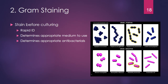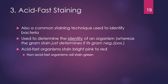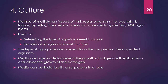Acid-fast staining is another common technique used to identify bacteria. Whereas gram staining just determines whether an organism is gram-negative or gram-positive, acid-fast staining actually tells you the identity of the organism. Acid-fast organisms stain bright pink to red, while non-acid-fast organisms stain green. Cultures are methods of multiplying or growing microbial organisms by letting them reproduce in a culture media such as a petri dish or agar plate.